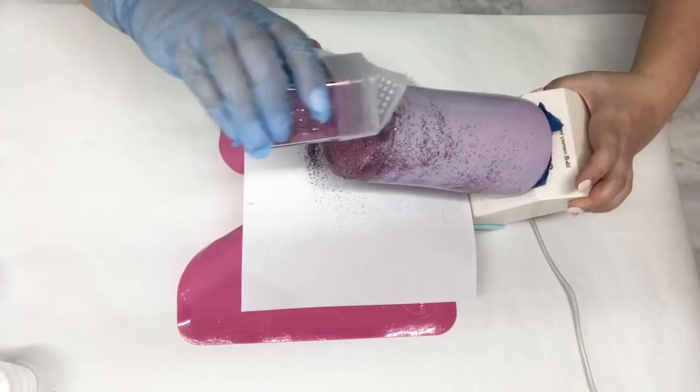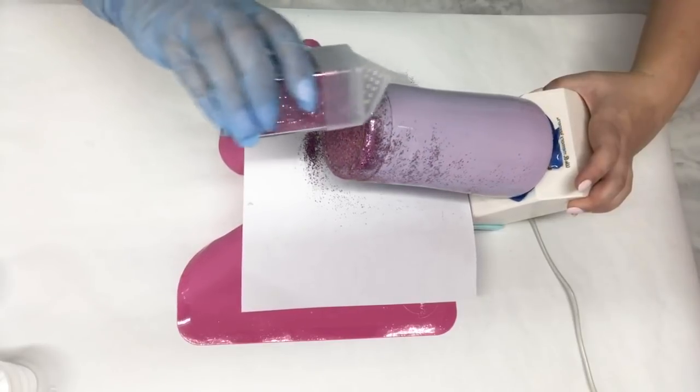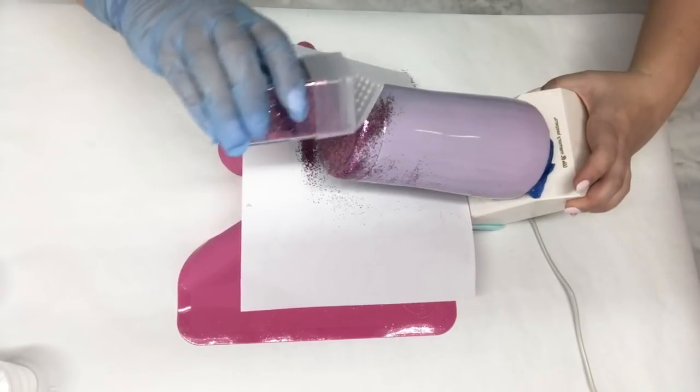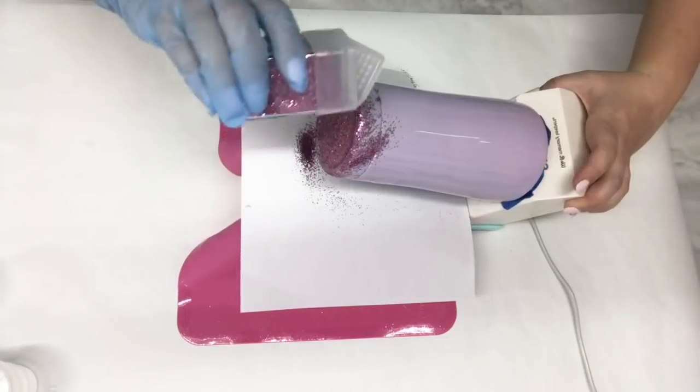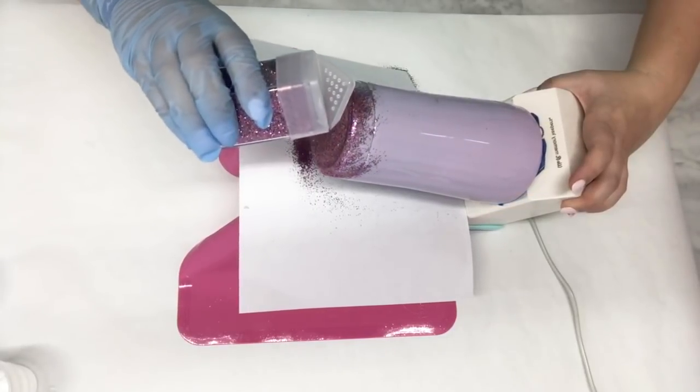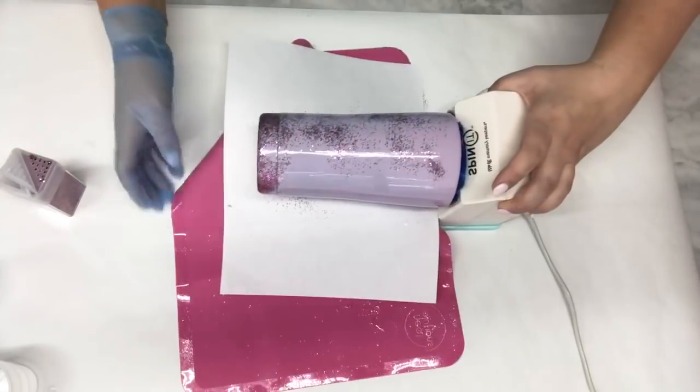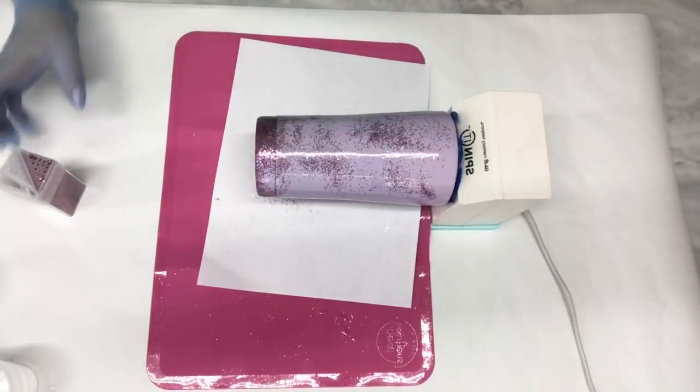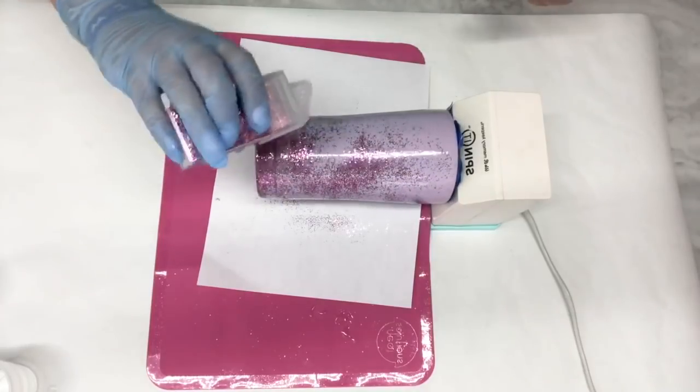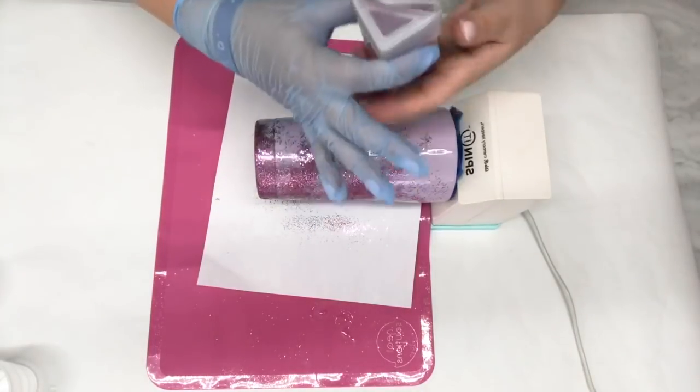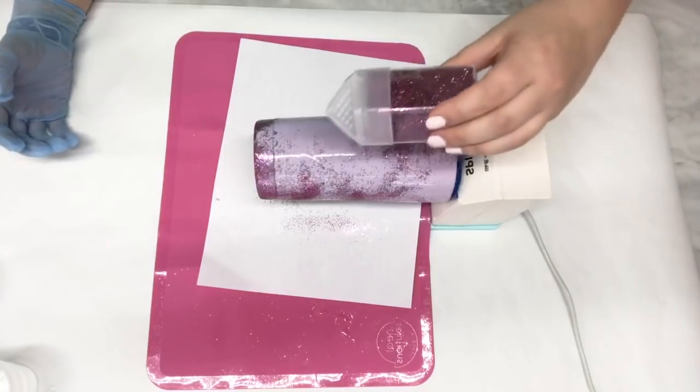I usually do the bottom first so that way you're not getting any real waste. The bottom is covered, put the cup back down, and we're ready to sprinkle on the rest of the cup.